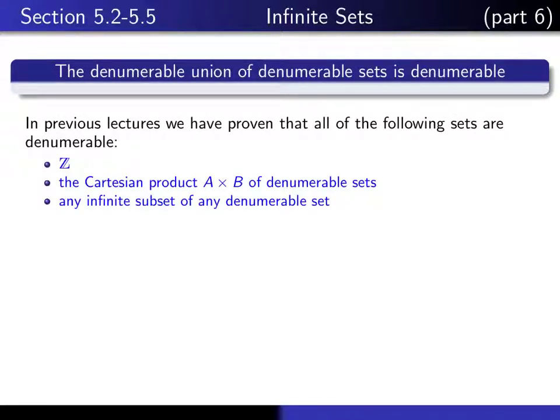So far there are a number of sets which we know to be denumerable. We know that the set of integers is denumerable. We know that if you take the Cartesian product of two denumerable sets, that the result is denumerable. And we know that if you take an infinite subset of any denumerable set, then that is itself denumerable.